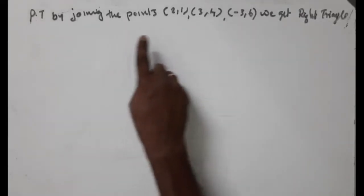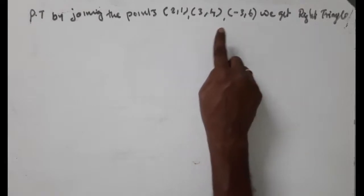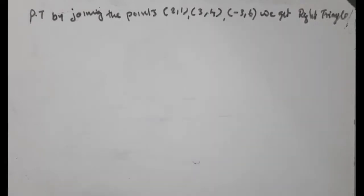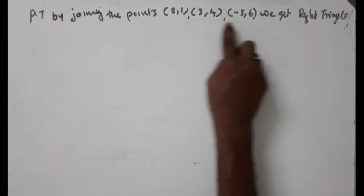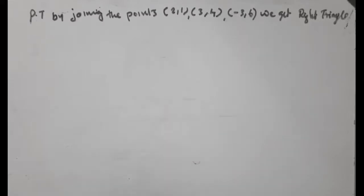Prove that by joining the points (2,1), (3,4), and (-3,6) we get a right triangle. The vertices are A(2,1), B(3,4), and C(-3,6). We need to find the three sides of this triangle using the distance formula.